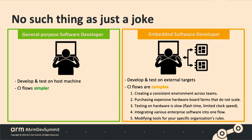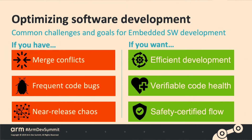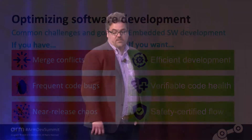Some of the challenges with continuous integration include merge conflicts — someone puts in software, someone else puts in other software, and suddenly you have a conflict. We also have bugs, although we try to avoid them. Near-release chaos is also a law: right before something goes live, something goes wrong. But if you want efficient development, verifiable code health, and a safety-certified flow, then continuous integration is the way to go.